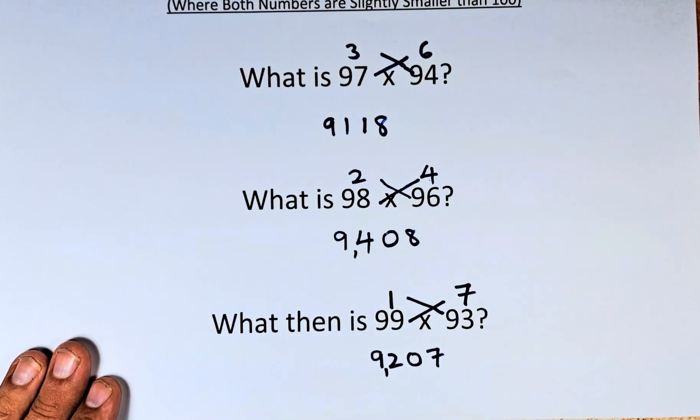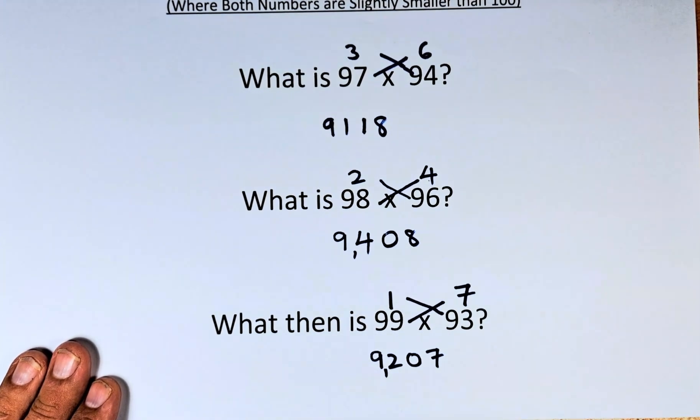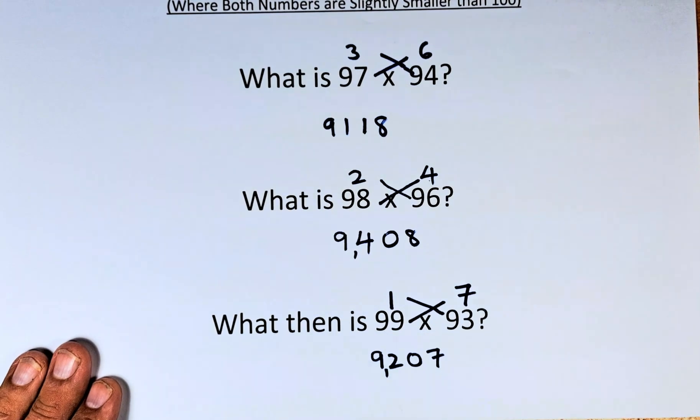So this is a neat trick when you multiply two 2-digit numbers where both numbers are slightly smaller than 100. That is, they're both in the 90s. Watch it, learn it, and impress your friends. Cheers everyone and have a good day.